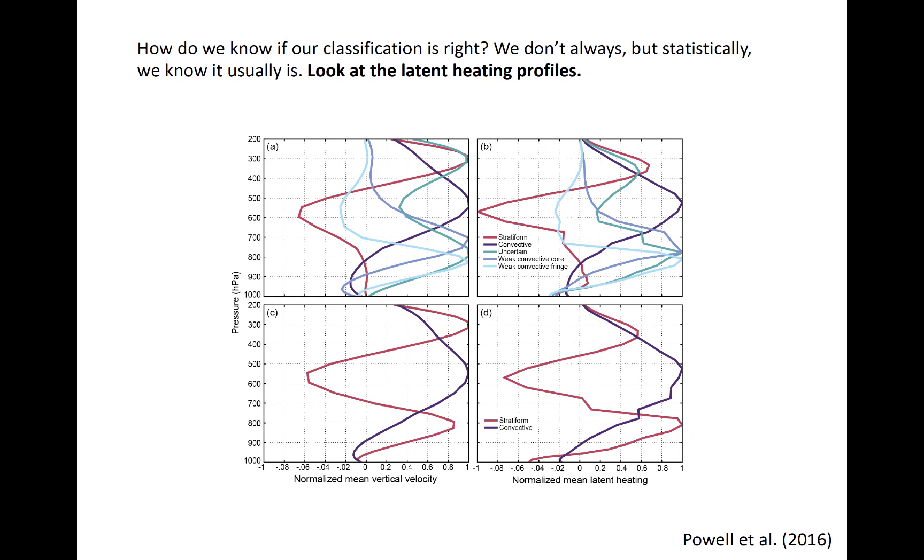And that is, convective rainfall is generally coincident with latent heat release through a deep layer of the atmosphere. So that's what this dark line is showing, with heating over here.